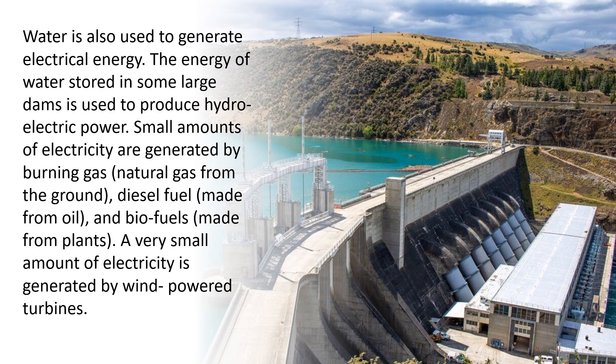Water is also used to generate electrical energy. The energy of water stored in some large dams is used to produce hydroelectric power. Small amounts of electricity are generated by burning gas — natural gas from the ground, diesel fuel made from oil, and biofuels made from plants. A very small amount of electricity is generated by wind powered turbines.